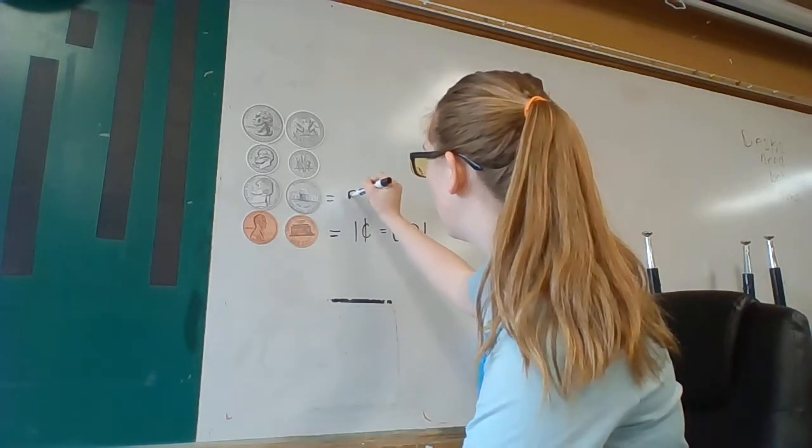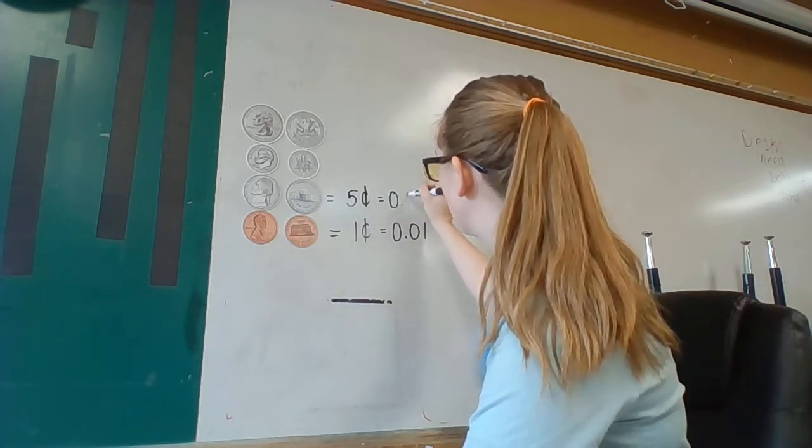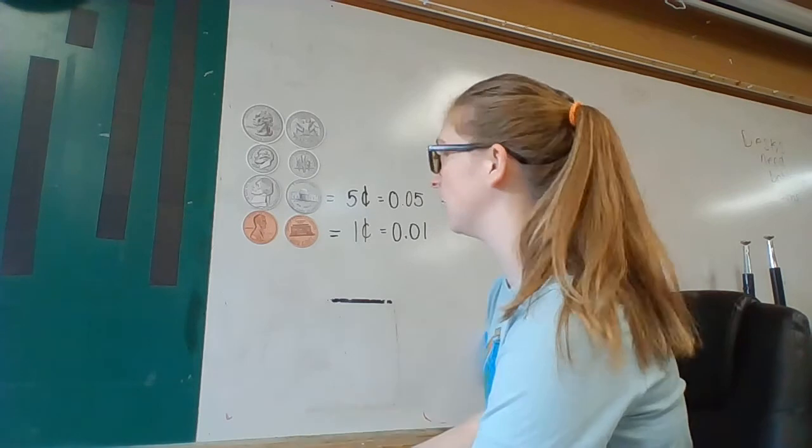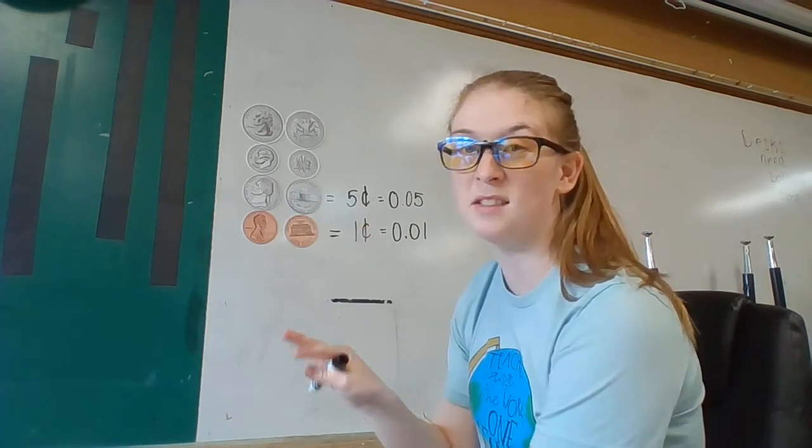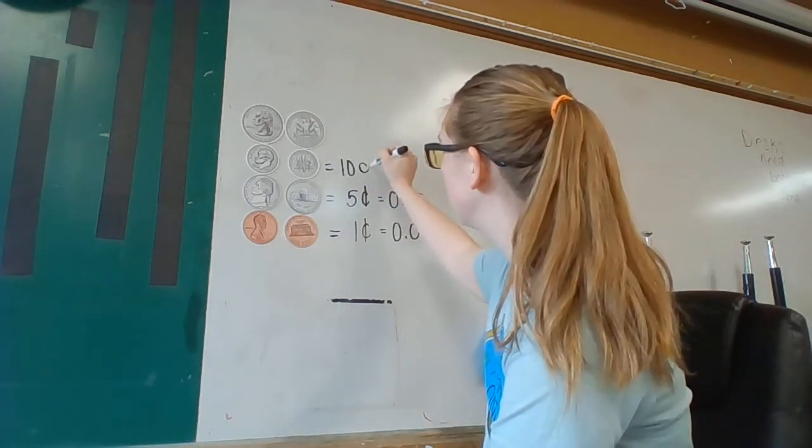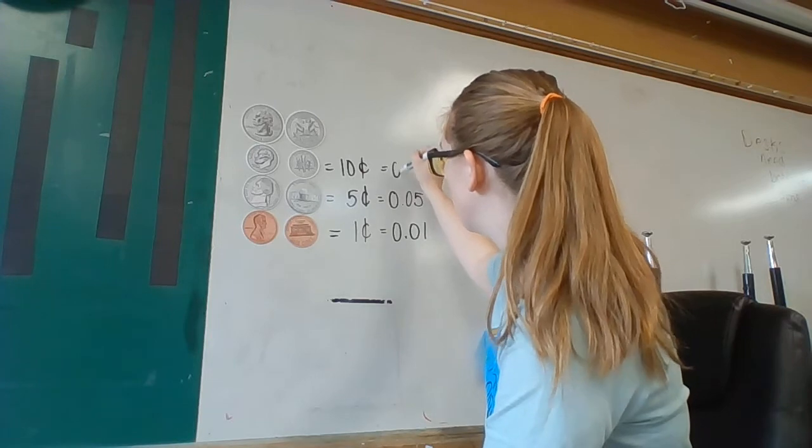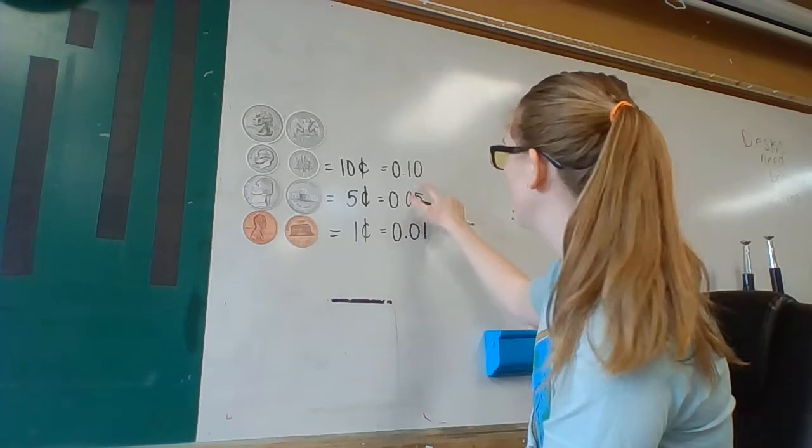The one right above it, that is five more cents than the nickel, so that's a dime, and that's worth ten cents, which can be written as zero dollars and ten cents. Notice how the place value changes.